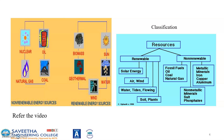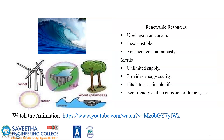The classification of energy is renewable and non-renewable. Under the category of renewable: solar energy, wind, water, tides, flowing water, soil, and plants. Non-renewable includes fossil fuels, oil, coal, natural gas, metallic minerals such as iron, copper, and aluminum, and non-metallic minerals. Renewable resources can be used again and again — they are inexhaustible and regenerated continuously. The merits of renewable resources are unlimited supply, energy security, sustainability, eco-friendliness, and no emission of toxic gases.